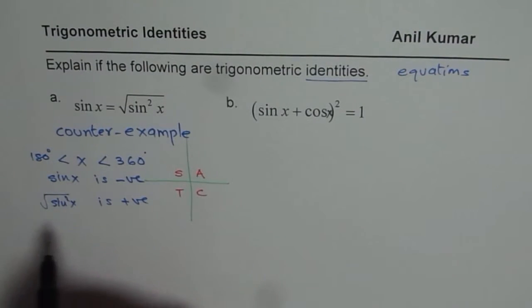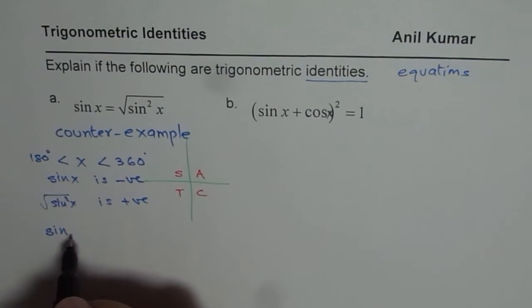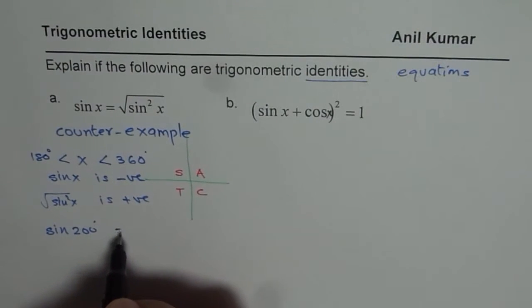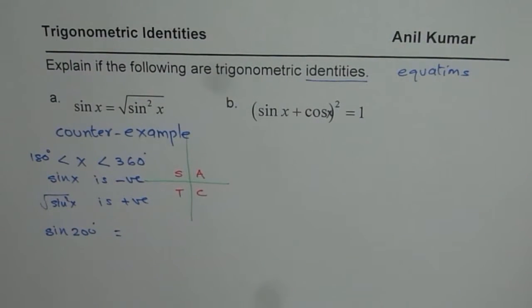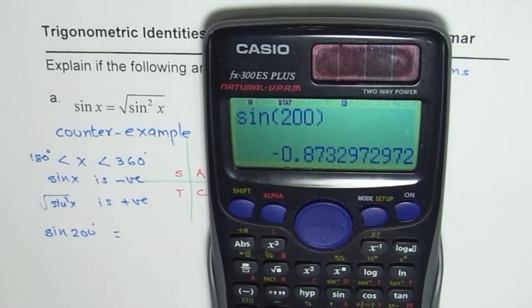What you can do is, you can take any value. Let us say, we have sin of 200 degrees. You can use 200 degrees and then check what is the value. If you use your calculator, you will have sin 200 equals to minus 0.8732.